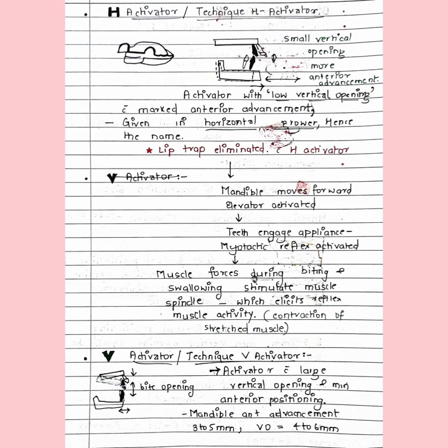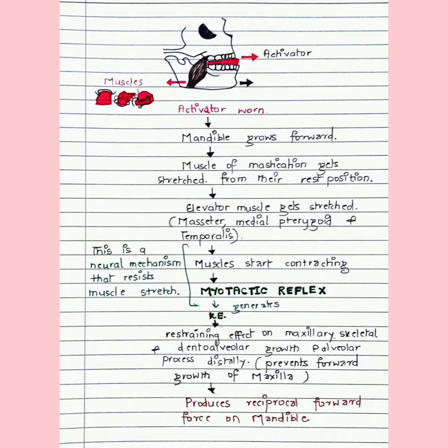The V-activator has large vertical opening and minimum anterior advancement. The anterior advancement is 3 to 5 mm and the vertical opening is more — 4 to 6 mm. Since the vertical opening required is greater, it is called the V-activator. Coming to the very important part of this video: the mode of action of the activator.